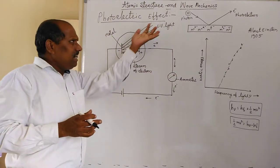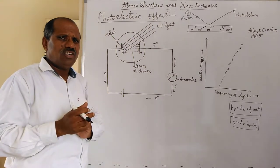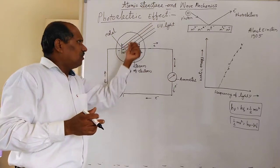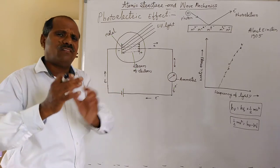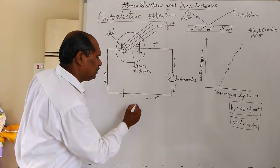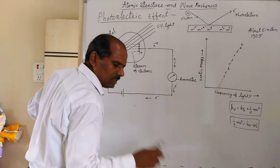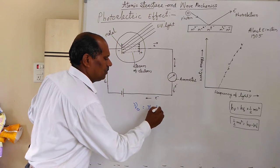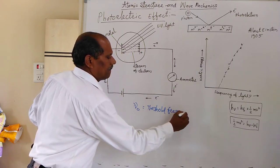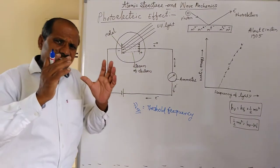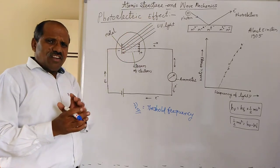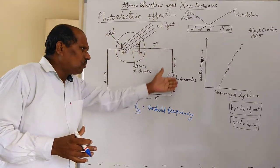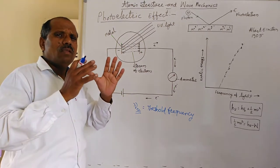Whenever the incident light radiation is below a certain frequency, then this effect is not observed. The light radiation incident on the metal should have a certain minimum frequency. That minimum frequency is called nu-zero, which is called the threshold frequency. This minimum frequency must be associated with the incident light for electrons to be ejected and for electric current to be generated.